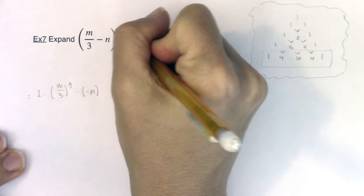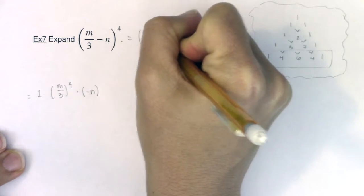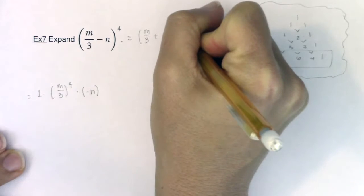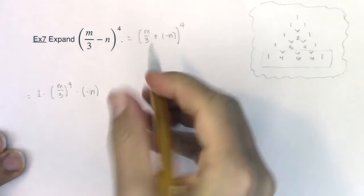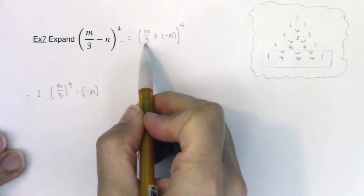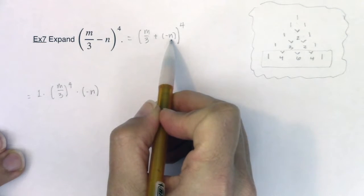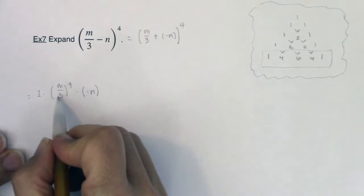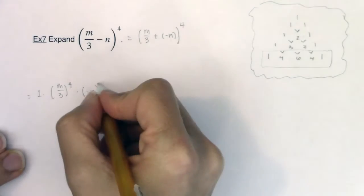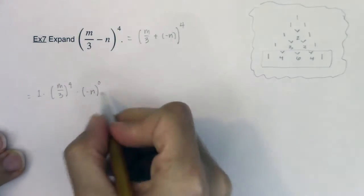Make sure you're seeing anytime you have a subtraction sign, this is technically plus a negative. So the first term in my binomial is m over 3, and the second term is negative n. So be careful with that. But at any rate, first term raised to the fourth power, second term raised to the zeroth power.